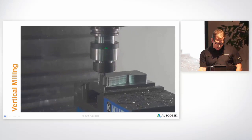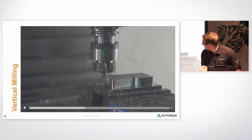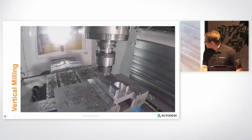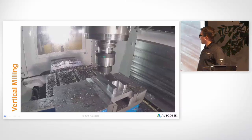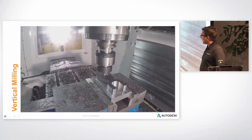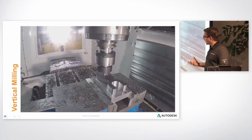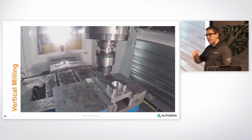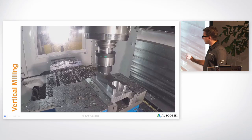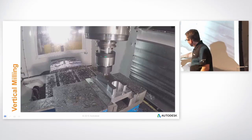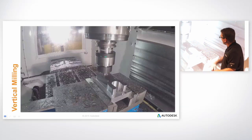This is a video from Pier 9 showing our adaptive clearing. It's something Autodesk is well known for and was part of the acquisition when they bought HSMWorks. It's a roughing algorithm that always cuts the same amount of material off the stock. If you look at all the chips, they'll all be the same size because it's taking the exact same amount off every time.